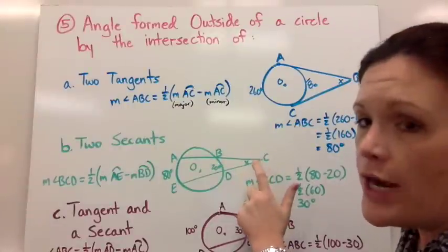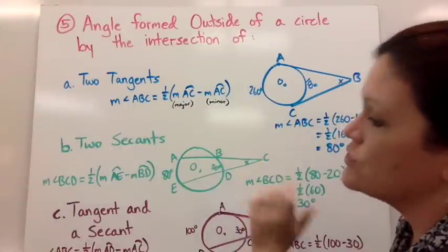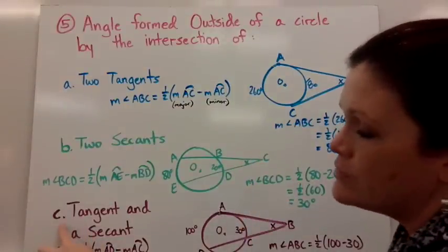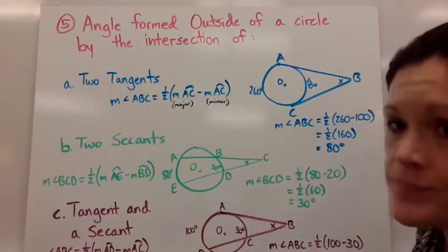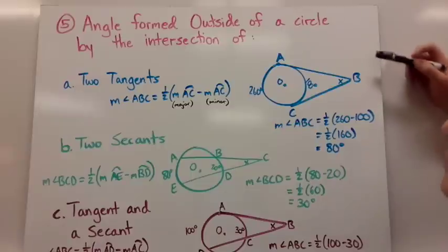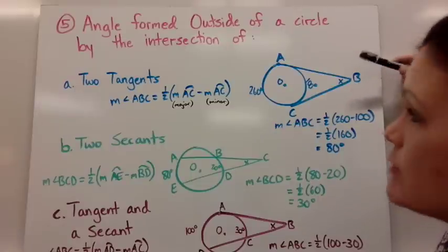or excuse me, our angle is sitting outside of the circle. And then what if an angle is formed by a tangent and a secant? So that would fall into this picture. And then I just have in each picture, a specific example to help you get what's going on.